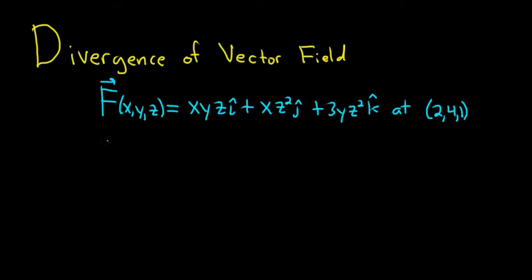So the formula for the divergence of F is equal to del M del X, plus del N del Y, plus del P del Z.